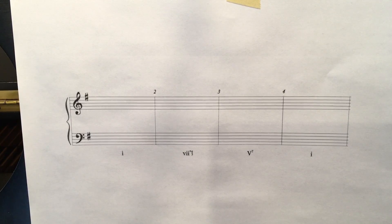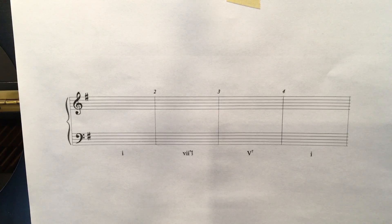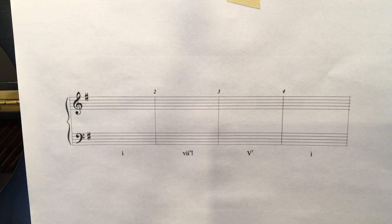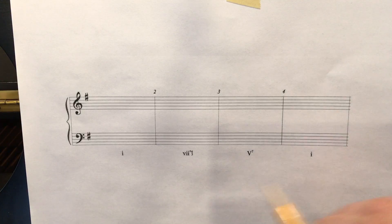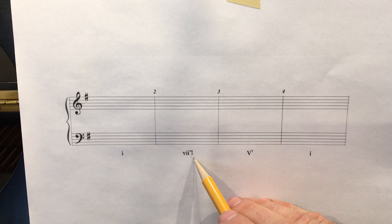Hey, Music Theory community, here's another video discussing leading tone diminished 7th chords. This time I'm presenting the diminished 7th chord in another inversion. In the prior video it was in 6-5 position, and here we have it in 4-3 position.